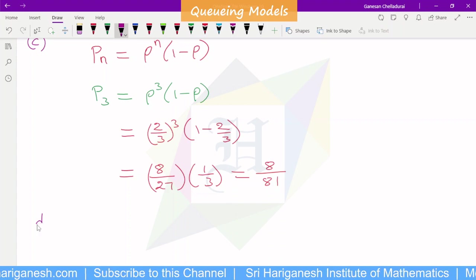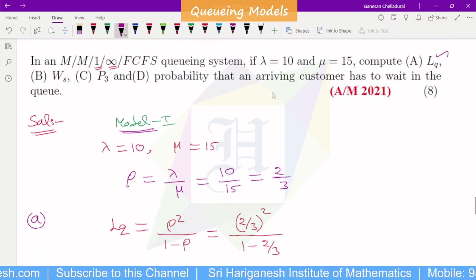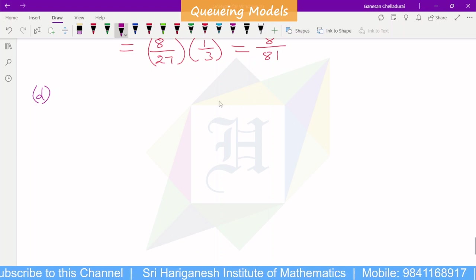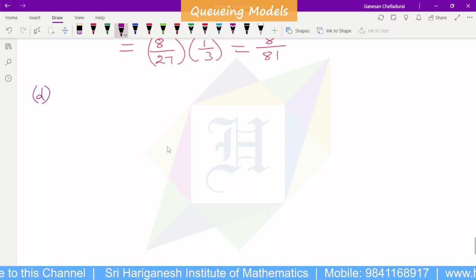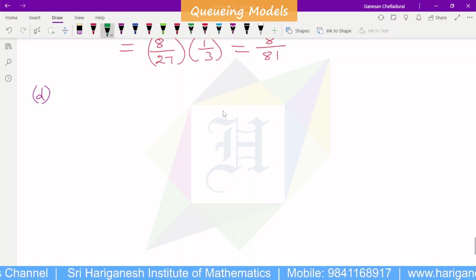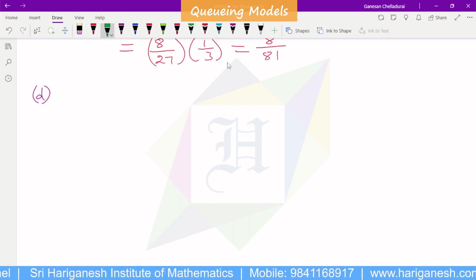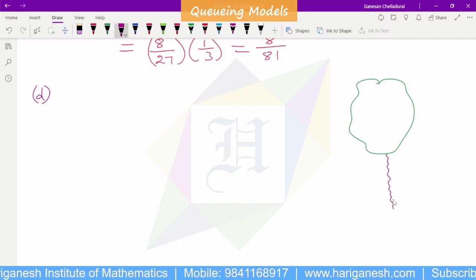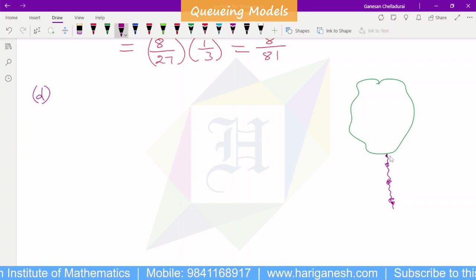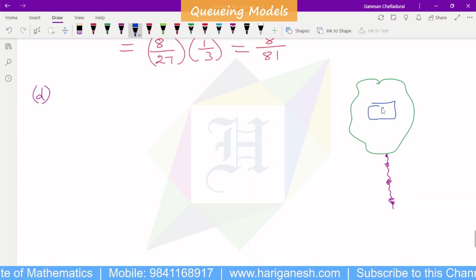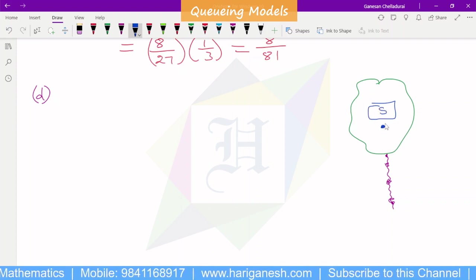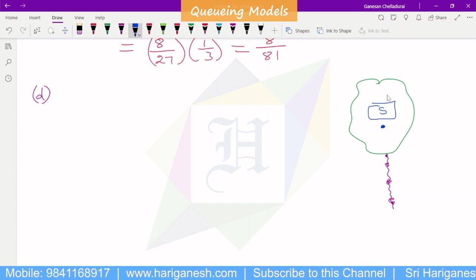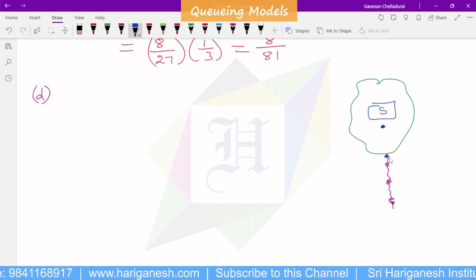The last one is D. This is the most important question. This is the probability that an arriving customer has to wait in the queue. When the customer comes to wait, it is the probability. This is the direct formula. If you already have PN formula, PN is no customer in the system. The customer comes to the line. If the customer comes to wait for service, one customer is already there. If you are already there, then wait for one customer. If you are in the queue, you have some customer.